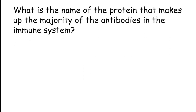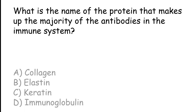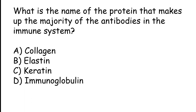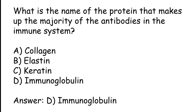What is the name of the protein that makes up the majority of antibodies in the immune system? Options: collagen, elastin, keratin, immunoglobulin. The correct answer is option D: immunoglobulin.